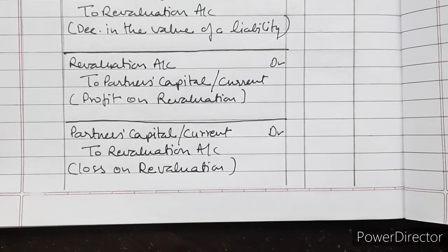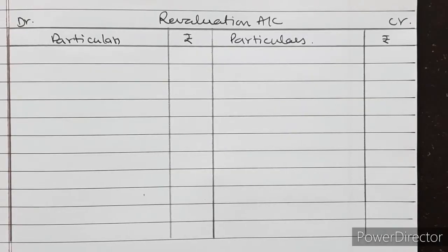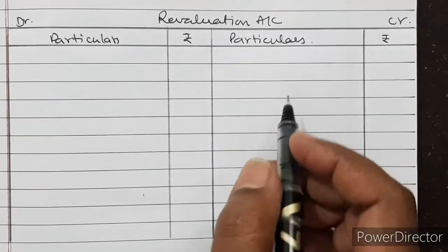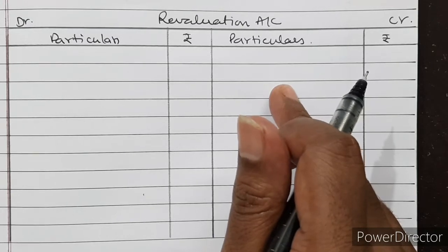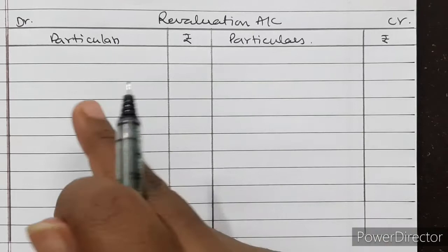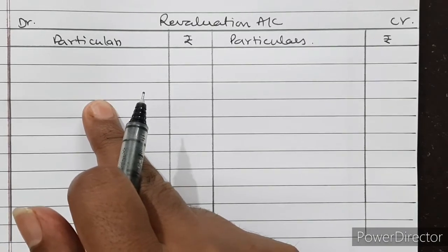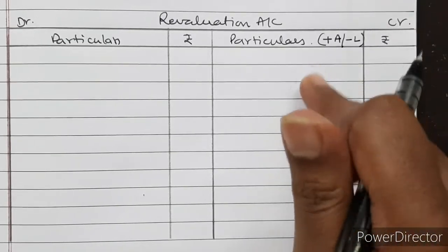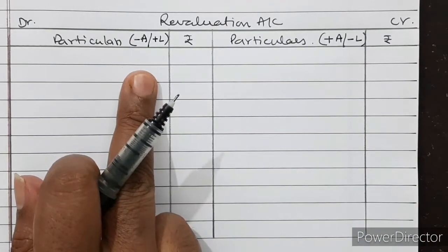These are the basic entries to record the revaluation of assets and reassessment of liabilities. In the revaluation account specimen: an increase in the value of an asset is recorded on the credit side, and a decrease in the value of a liability is also recorded on the credit side. A decrease in the value of any asset or increase in the value of a liability is recorded on the debit side.